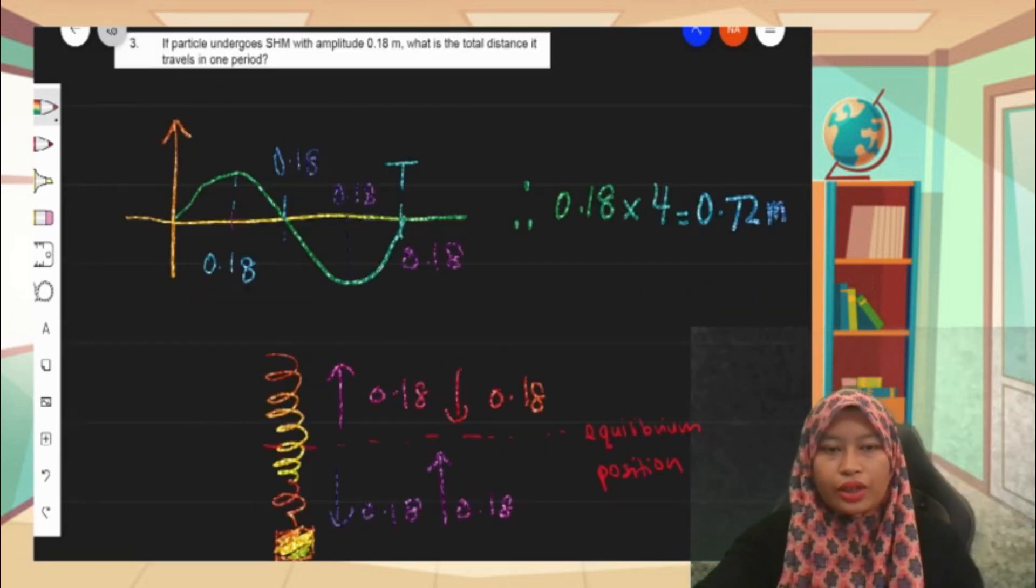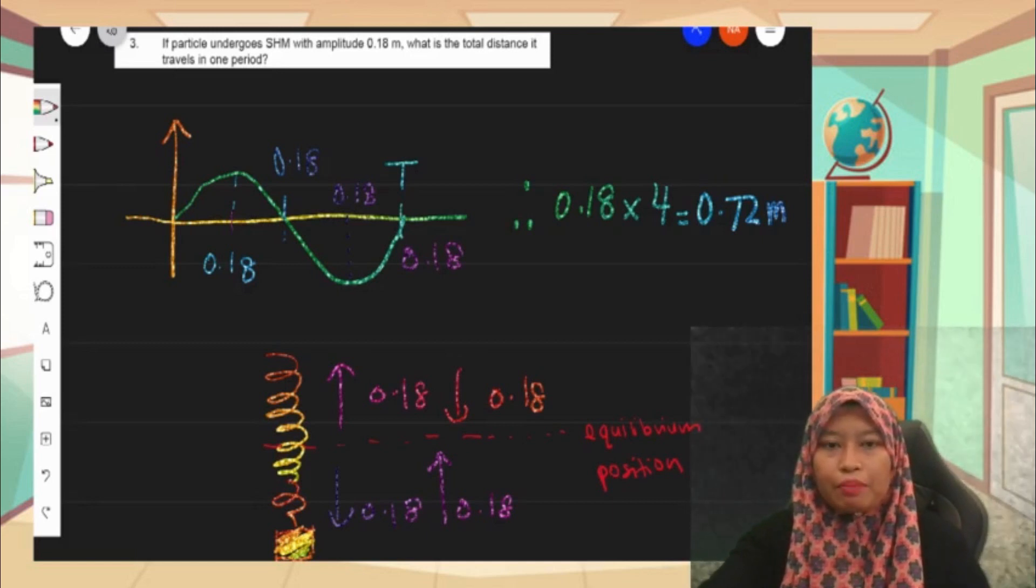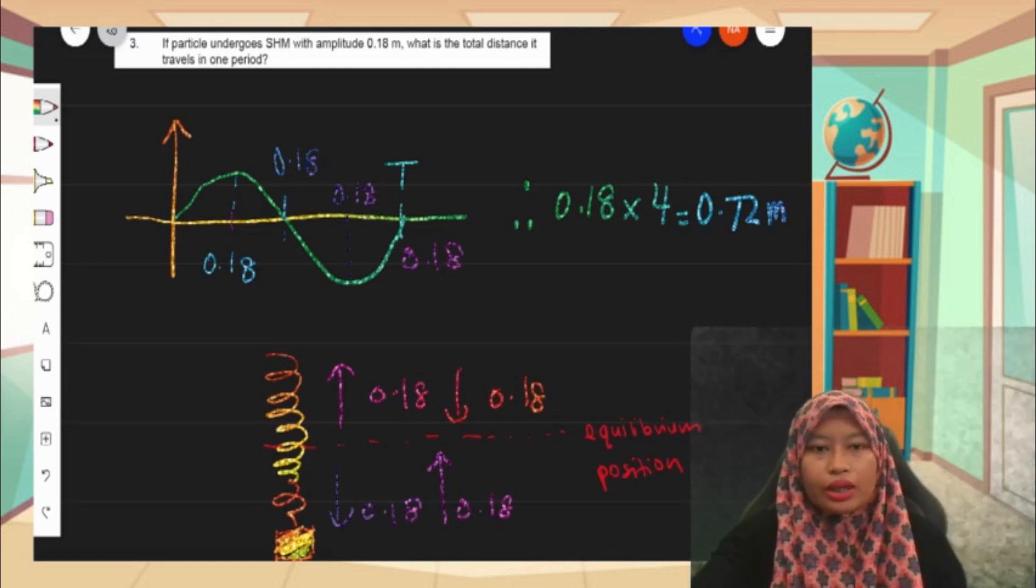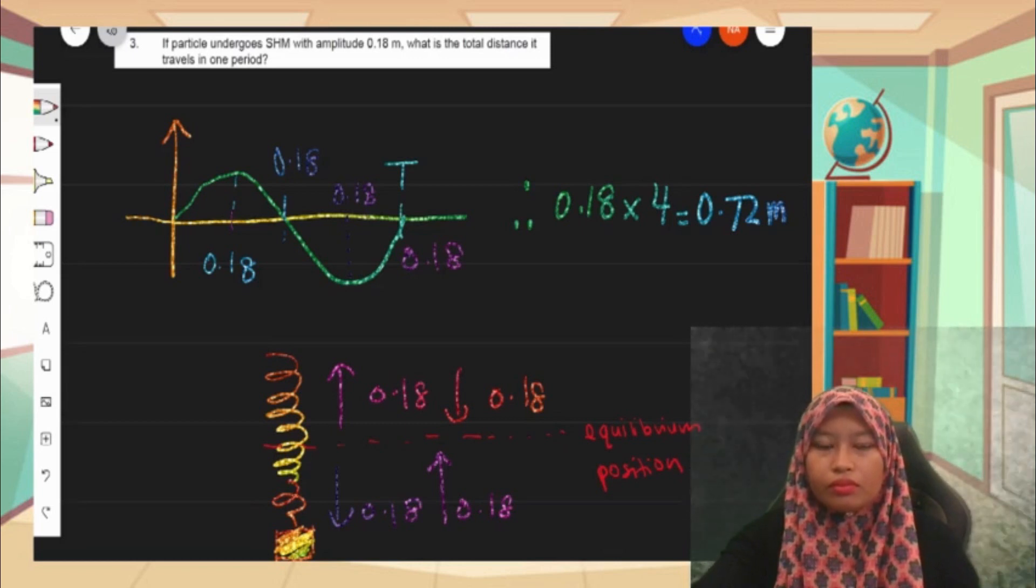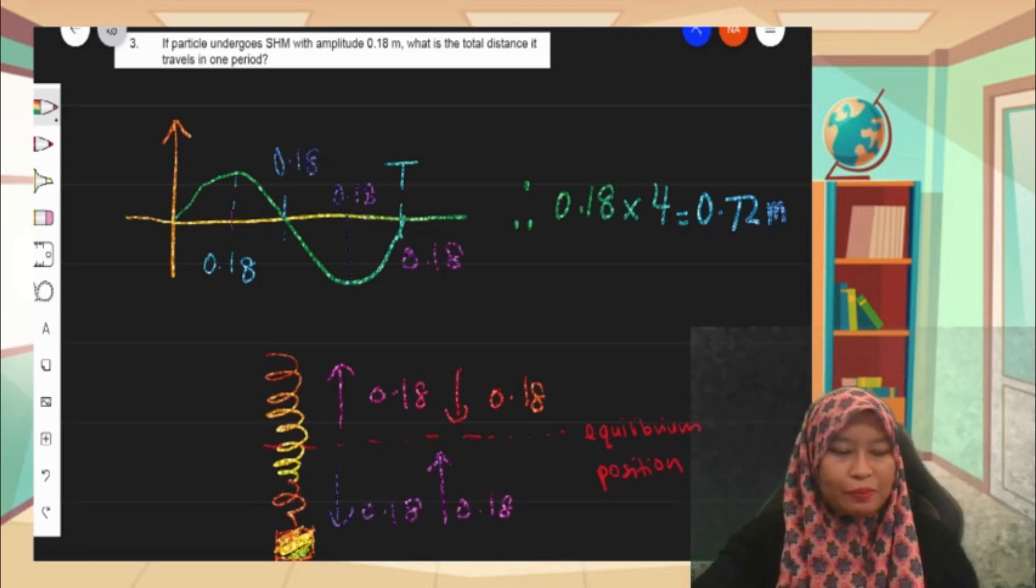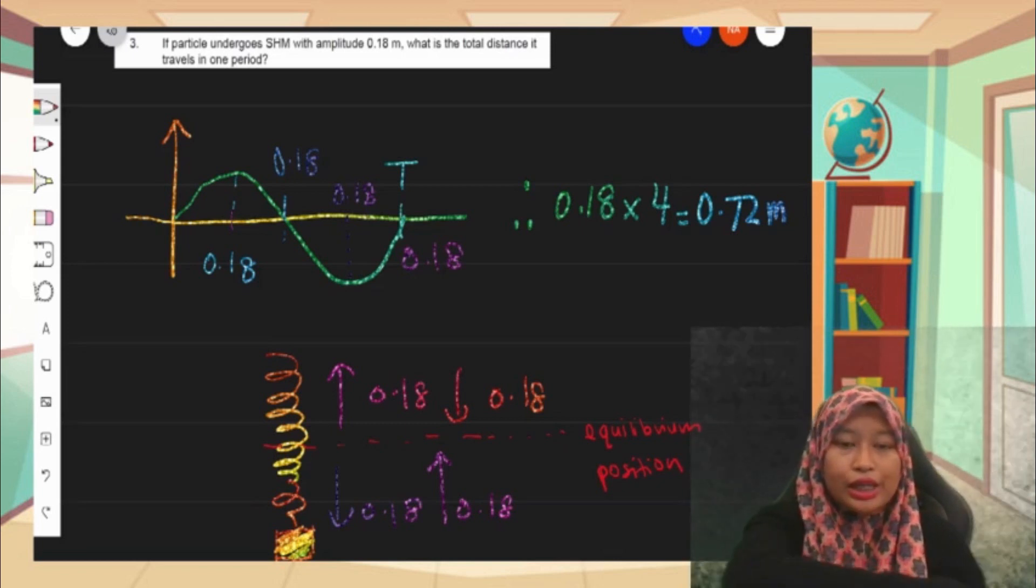For number three, if a particle undergoes SHM with amplitude 0.1 meter, what is the total distance it travels in one period?